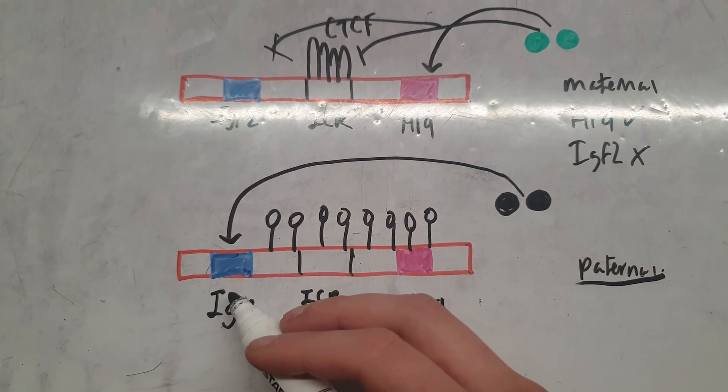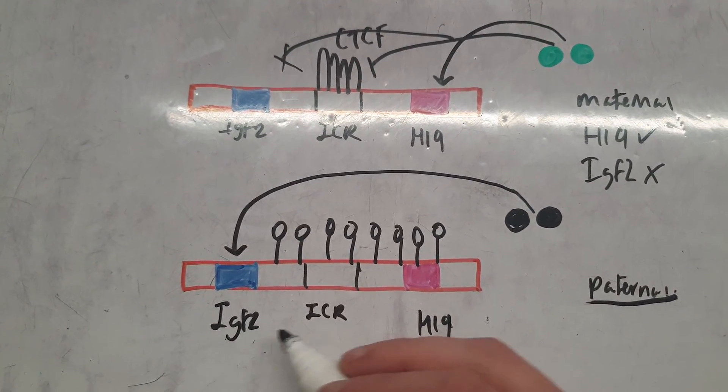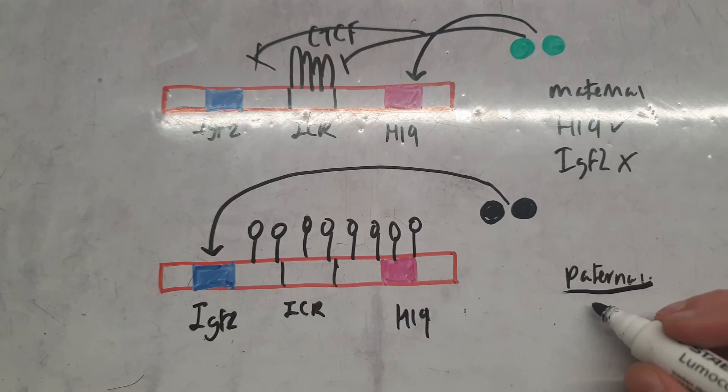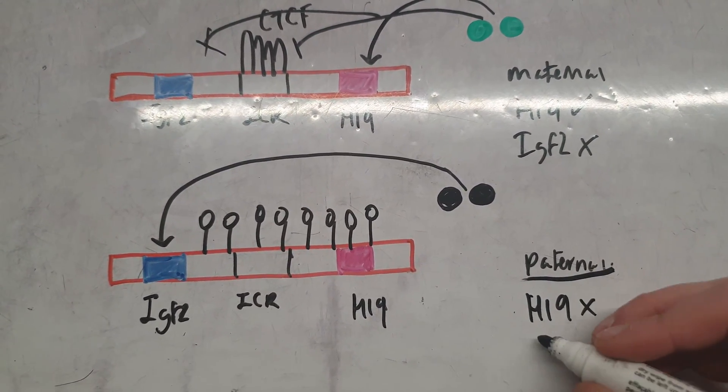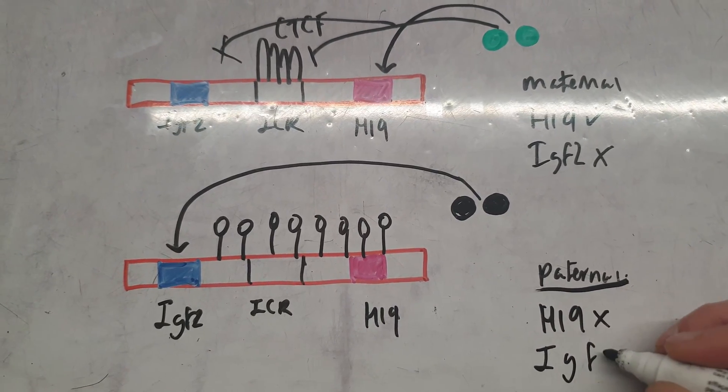Therefore we will have expression of IGF2 and not expression of H19. So on the paternal chromosome we have no H19 being expressed and we have IGF2 expression.